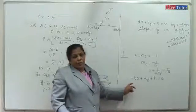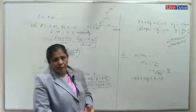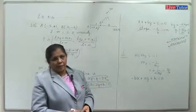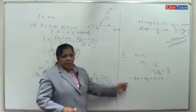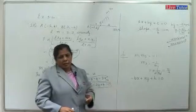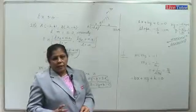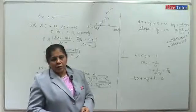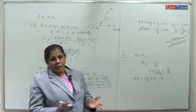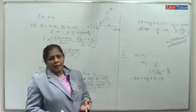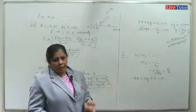Either the coefficient of x changes sign or the coefficient of y changes sign. This concept applies to question 19: the diagonals are perpendicular, so you find the equation of diagonal AC first, then write the equation of BD by swapping coefficients.